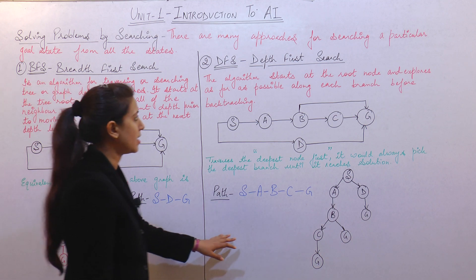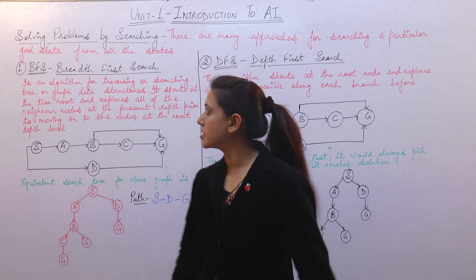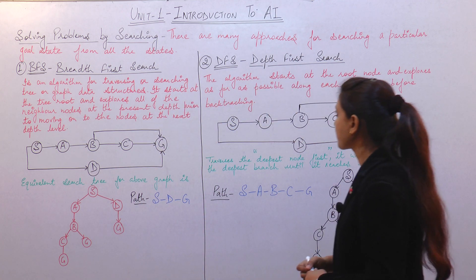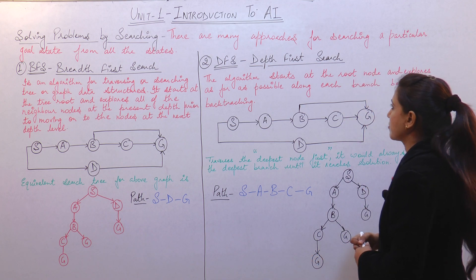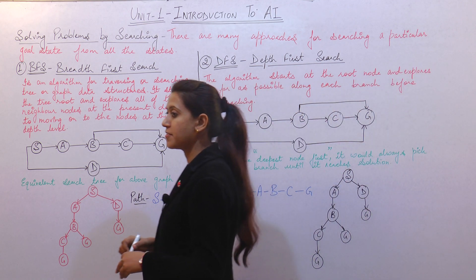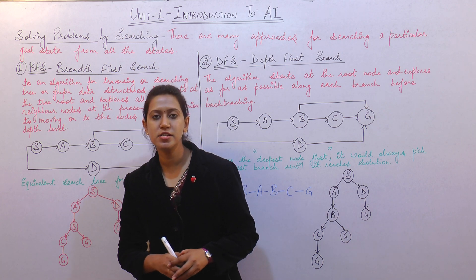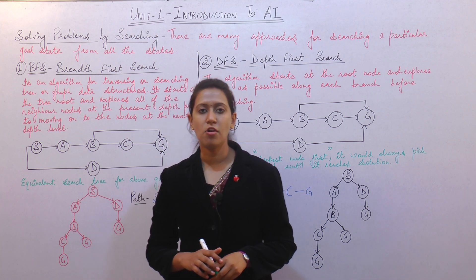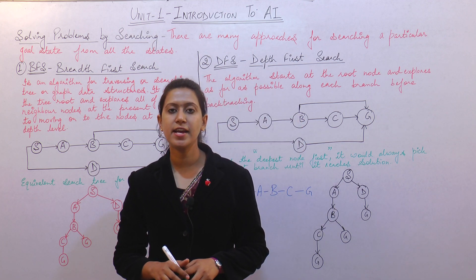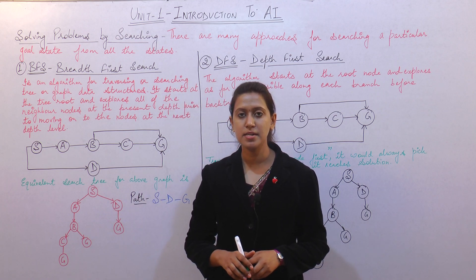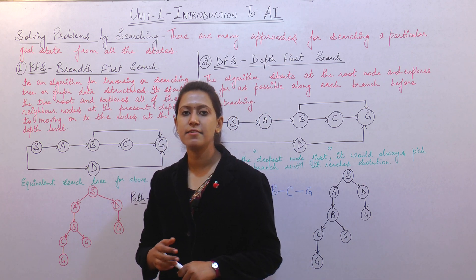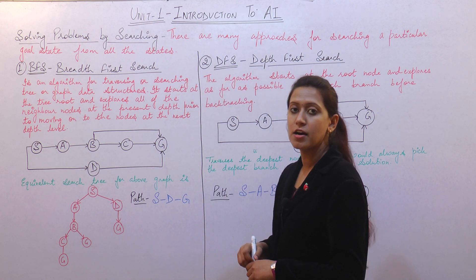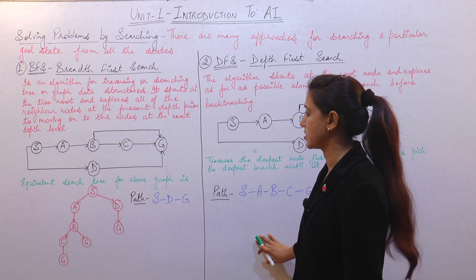There are many approaches for searching a particular goal state from all the states. We are given the initial state, and in some types of searching we are also given the goal state. When we are given the goal state we can easily find the path, but when we are not given the goal state it becomes difficult and time consuming for our system to find the goal state and the path to reach it.